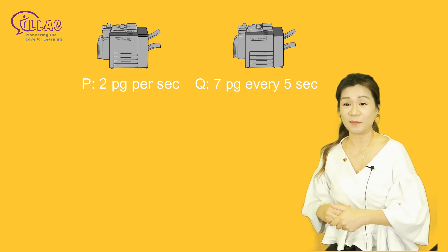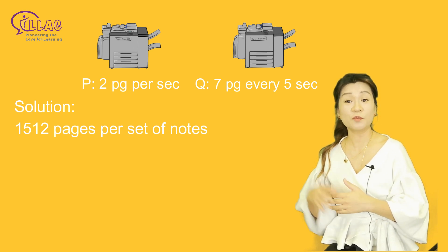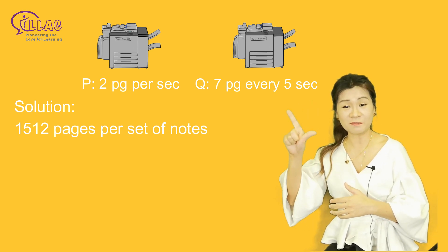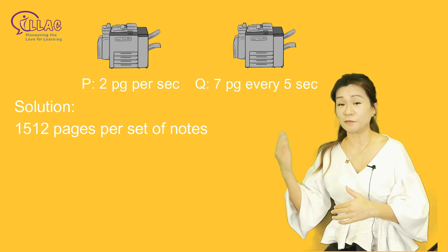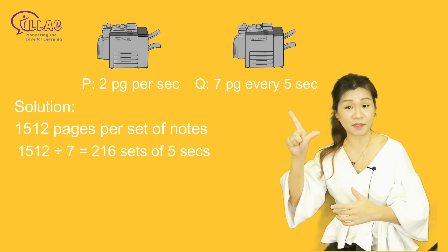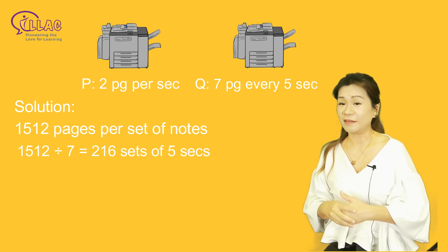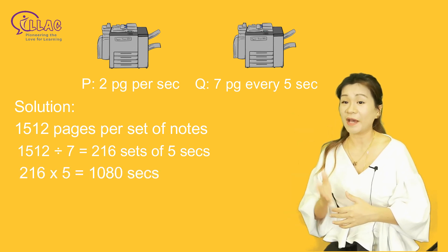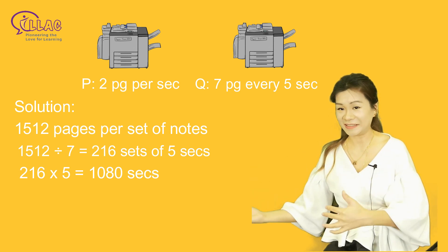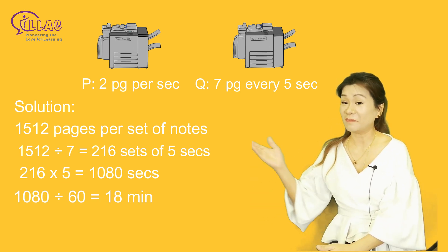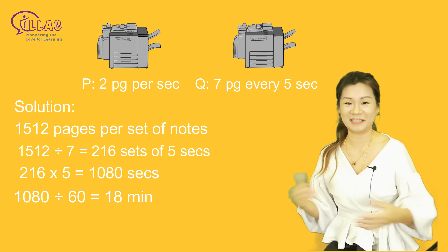For part B, we now know the total number of pages is 1512, and that Machine Q prints 7 pages every 5 seconds. All we need to do is find out how many sets of 7 there are in 1512, and then multiply that by 5 seconds to get 1080 seconds. Divide that by 60, and you will get 18 minutes as the final answer.